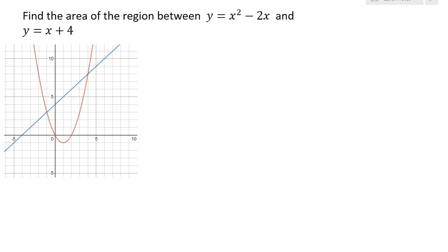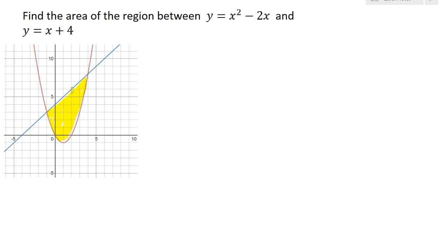You always want to start by looking at the graph for a few reasons. The first reason is we want to make sure that there is a region bounded by these curves. Looking at this graph, we can see there is a region between these two curves that I'm highlighting right here, and this is what we're going to find the area of. The second reason is we need to determine which function makes the top boundary and which makes the lower boundary.